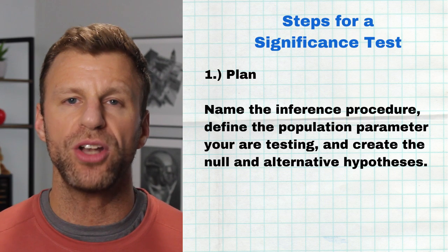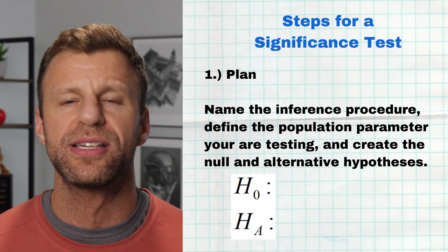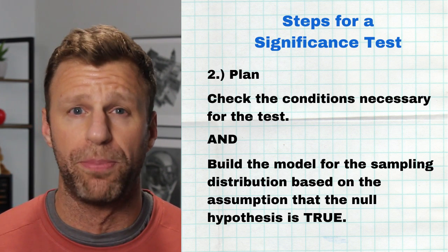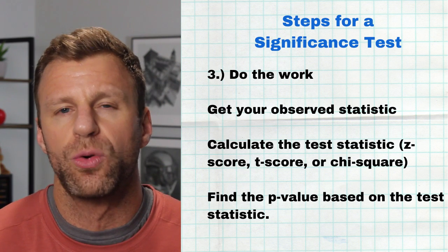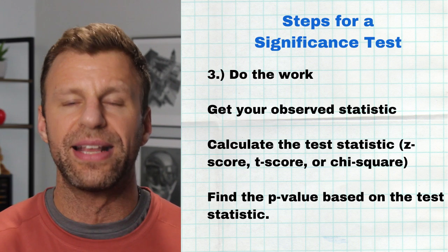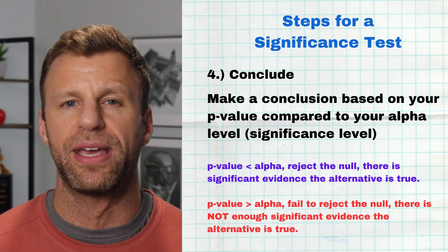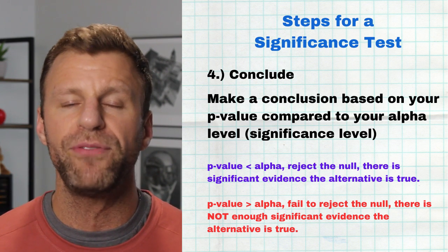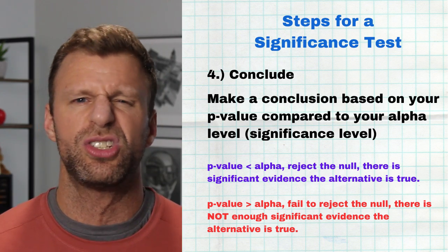No matter which of the nine tests you use, they all follow the same basic format of four steps. Step one: define the parameter of interest — what is the population parameter in that problem — and create your null and alternative hypotheses based on what's said in the problem. Step two: check the conditions necessary for the test and build the model on the assumption that the null hypothesis is true. Step three: calculate your test statistic — typically a z-score, t-score, or chi-squared value — and then calculate your p-value. Step four: use your p-value to make a decision. A p-value below the significance level means you reject the null — you do have evidence for the alternative. A p-value above the significance level means you fail to reject the null — you do not have enough evidence to say the alternative is true. That doesn't mean the null is true; we just don't have enough evidence to say otherwise.